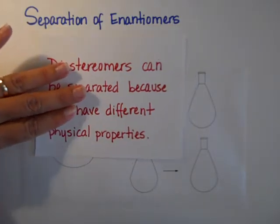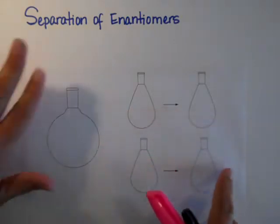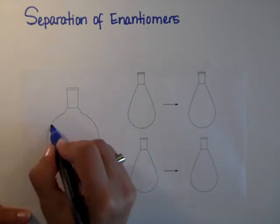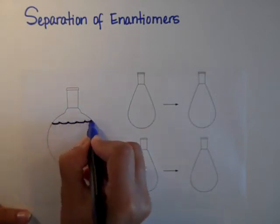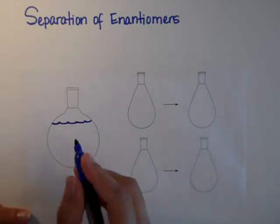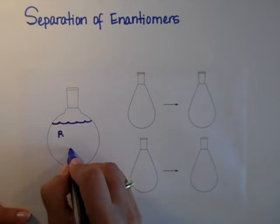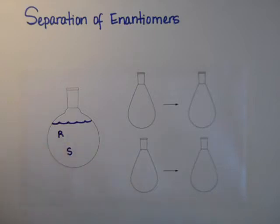So this is what we're going to do. I already have the glassware because I'm not really good at drawing glassware, but let's say you have a mixture of two enantiomers, whether it's a racemic mixture or an enantiomeric excess, it doesn't matter. You have the R enantiomer and you have the S enantiomer in there.